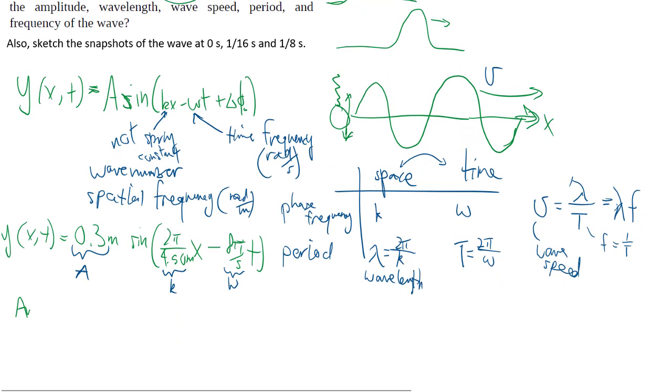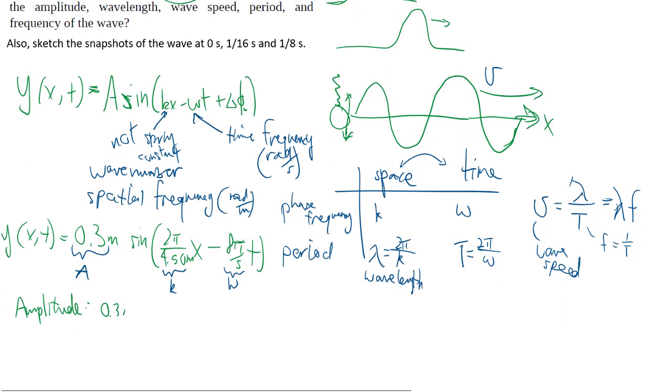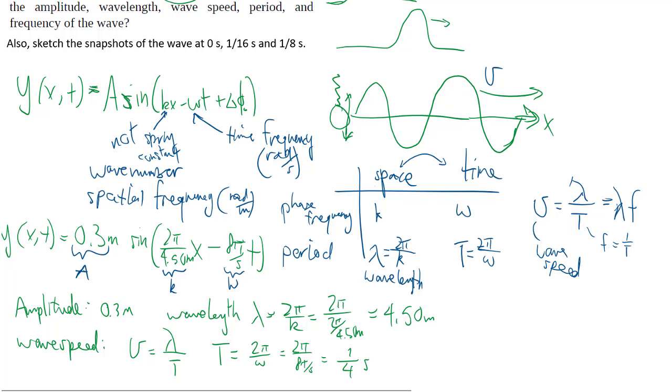So we got more or less three of the things straight off the bat, and everything else relates to those. So we already have the amplitude done. Wavelength lambda is 2π over k, simple right? So then the wave speed, we have lambda, so we need the period first. One over four seconds, or 0.25 seconds.